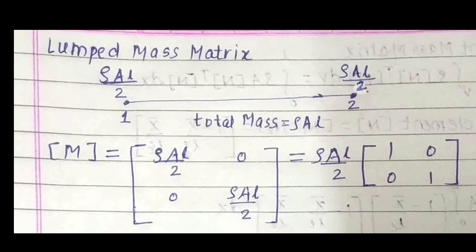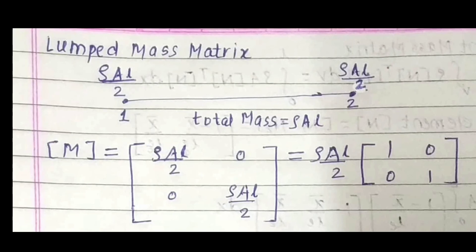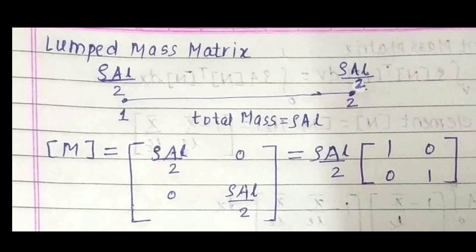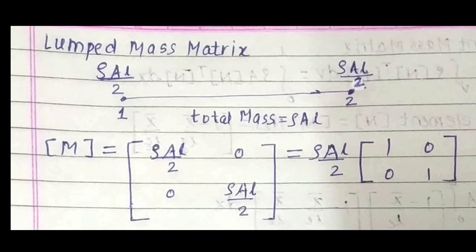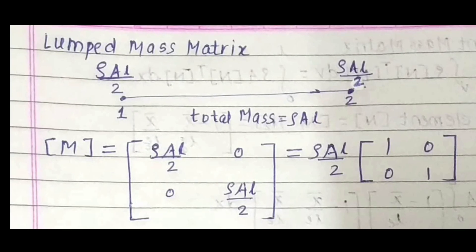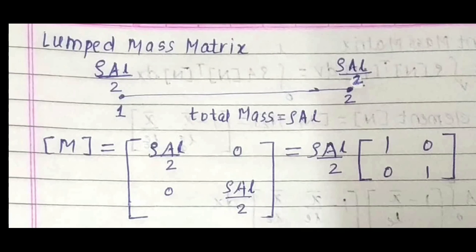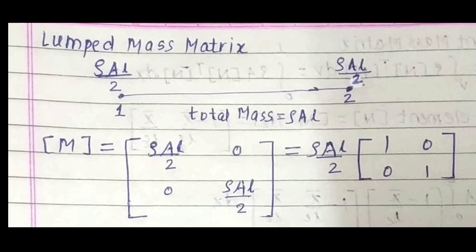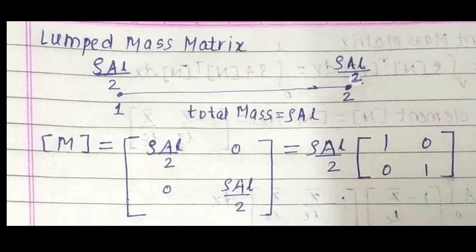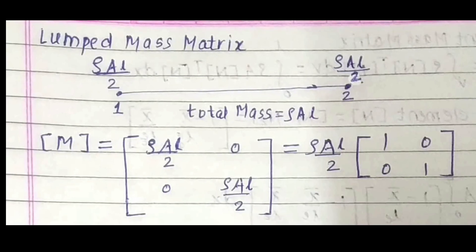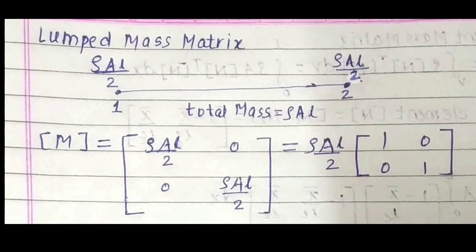Now we will see the lumped mass matrix. In the lumped mass matrix it is assumed that the total mass of the element is distributed equally at every node. If the total mass is ρAL, then ρAL/2 goes to node 1 and ρAL/2 goes to node 2. So the lumped mass matrix M = ρAL/2 · [1, 0; 0, 1]. Thank you for watching. In the next lecture we will be solving problems based on dynamic analysis of free axial vibration of the rod.